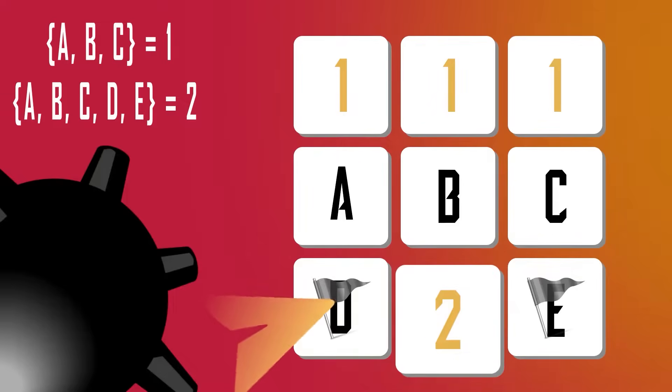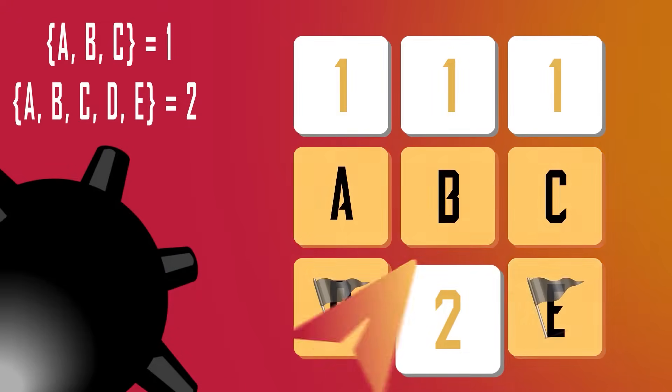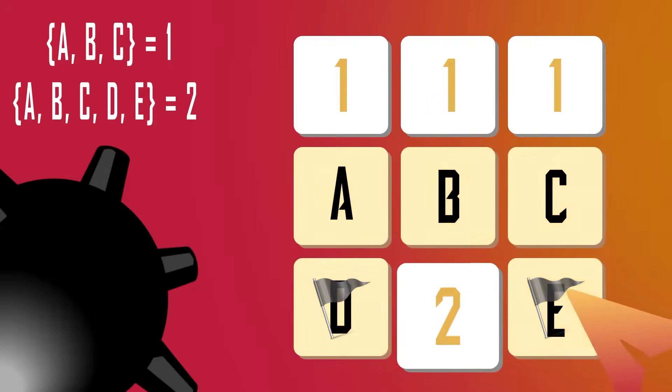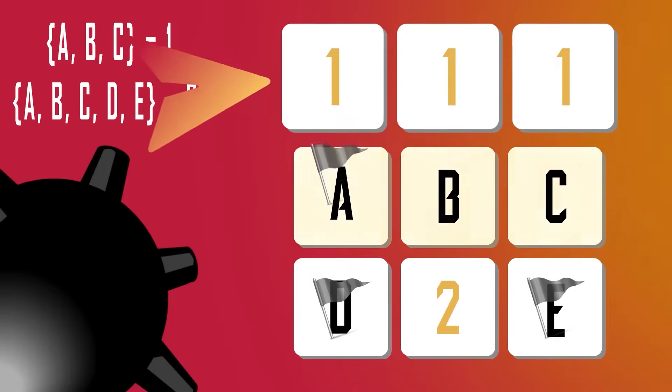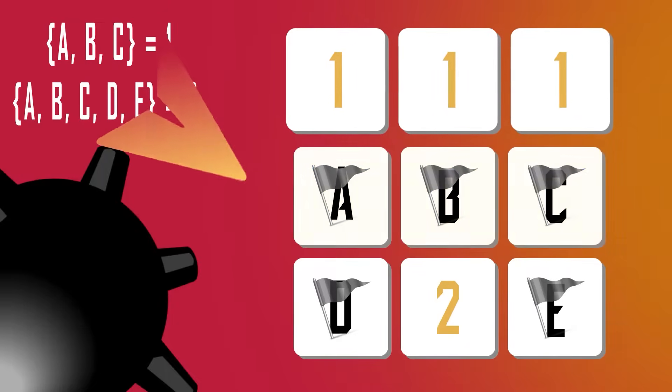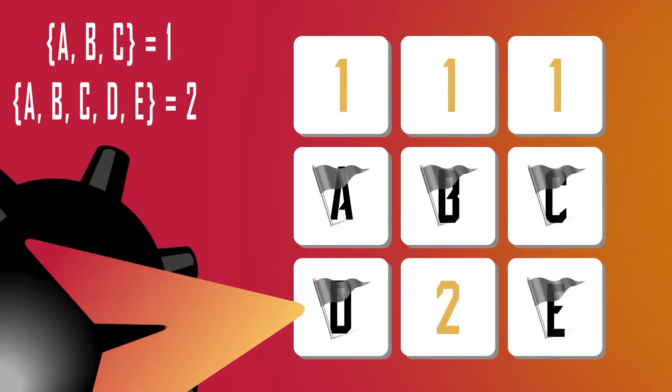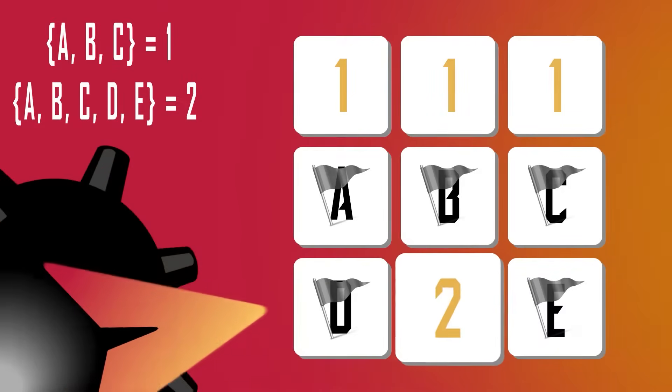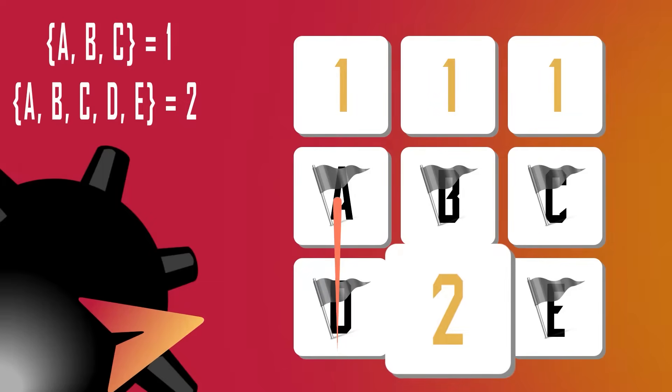After all, if two of A, B, C, D, and E are mines, and only one of A, B, and C is a mine, then it stands to reason that exactly one of D and E must be the other mine.